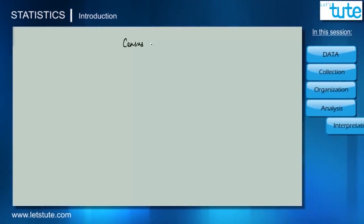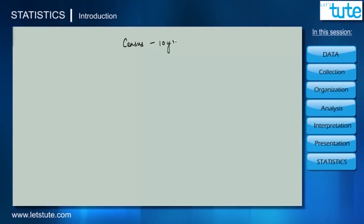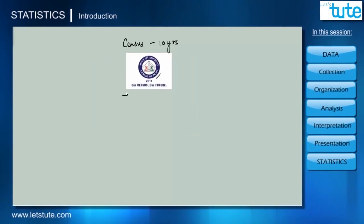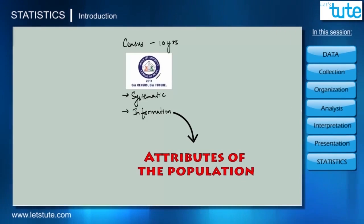Census is an exercise which usually happens every 10 years. Indian census is one such exercise which provides us information about different characteristics from the population of India. A census is nothing but a systematic procedure where we try to acquire and record information about the different attributes of the population.